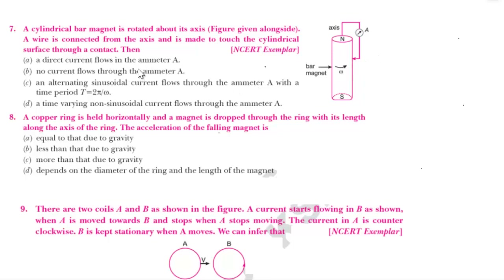The question asks whether a direct current flows in the ammeter. Since the magnet is rotating, the magnetic field is moving. But changing magnetic flux — is there any current flowing through the ammeter? Current is not flowing through the ammeter.